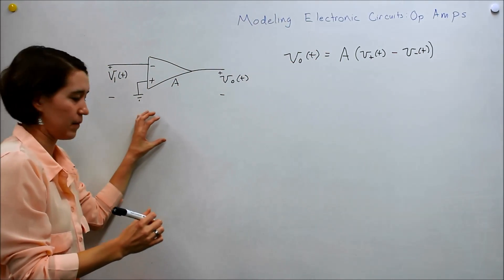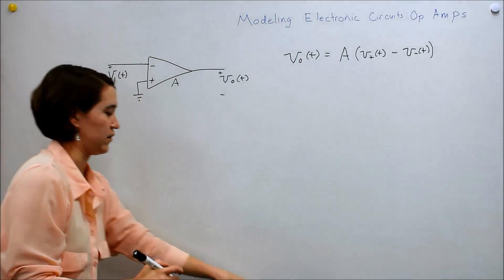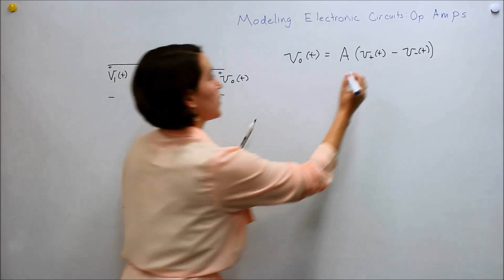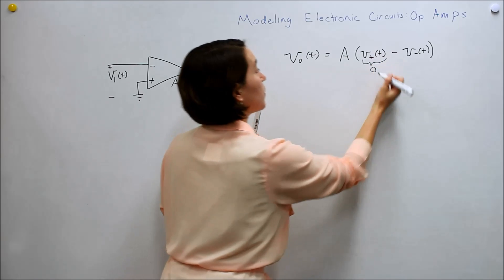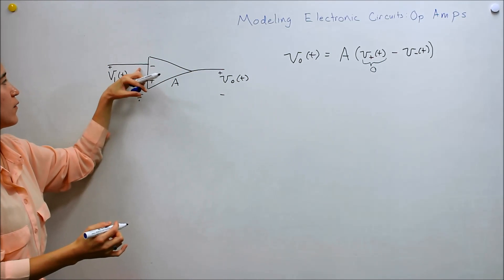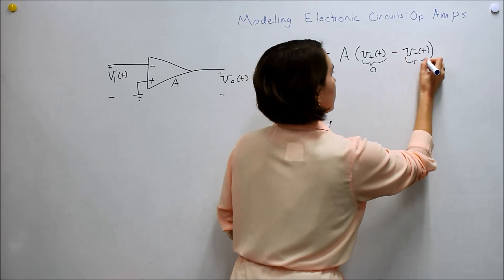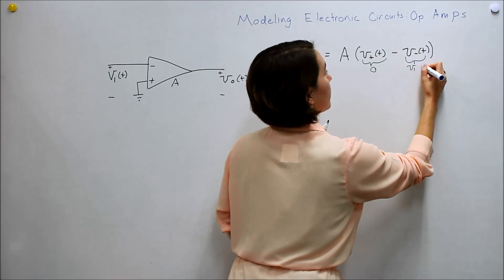And for this specific setup, we already know some values here. So we've connected the positive terminal to zero. So we know that this voltage here is zero. And we're calling the voltage at the negative node V1. So this is going to be V1 of T.